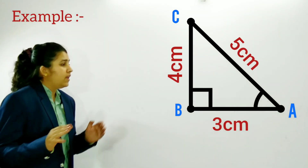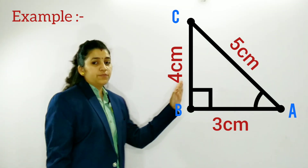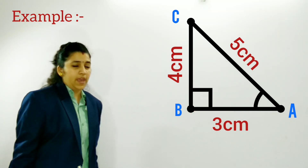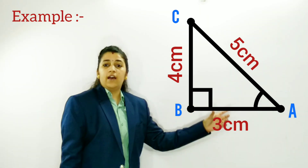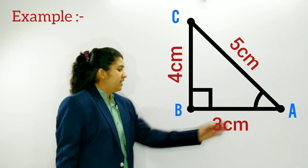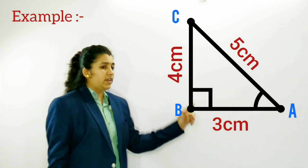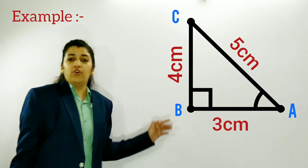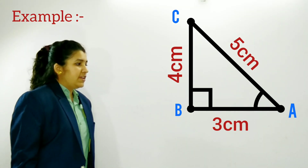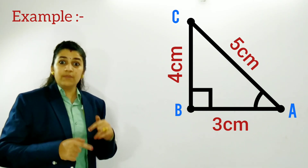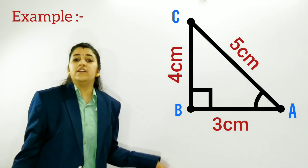Now let's take an example. We have a triangle in which the base is 3 cm, the perpendicular is 4 cm, and the hypotenuse is 5 cm. The question asks to calculate the trigonometric ratios taking theta at angle A. Sin A equals perpendicular upon hypotenuse — that is 4 upon 5. Cos theta equals base upon hypotenuse — that is 3 upon 5. Tan theta equals perpendicular upon base — that is 4 upon 3.